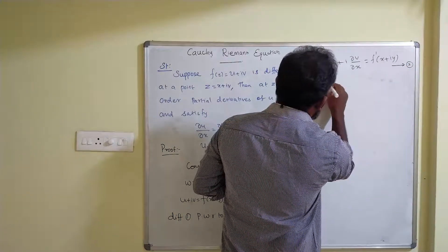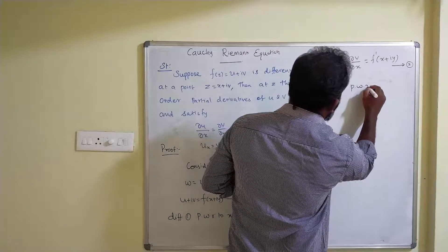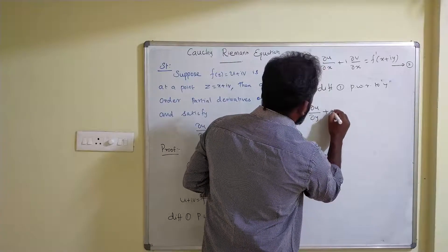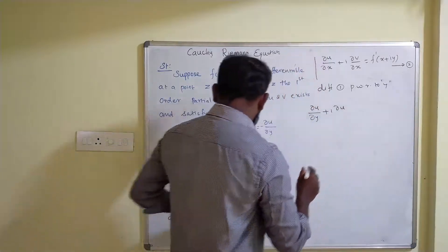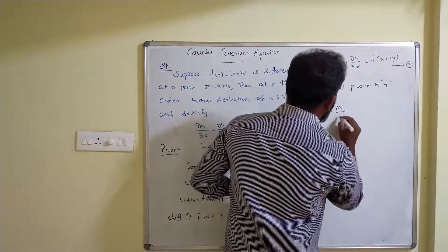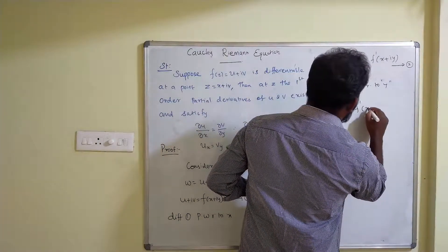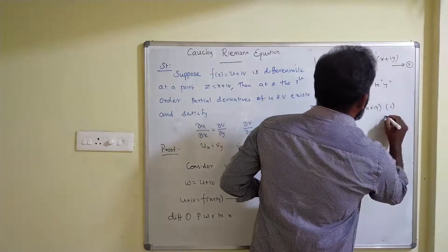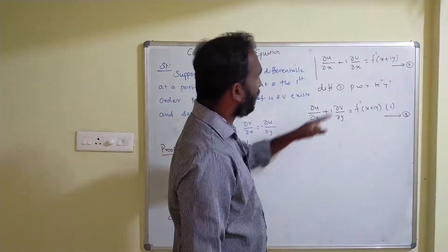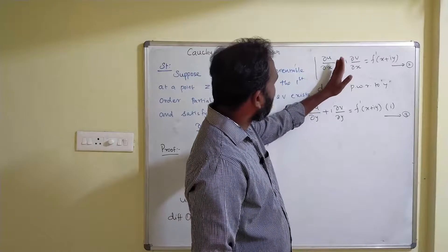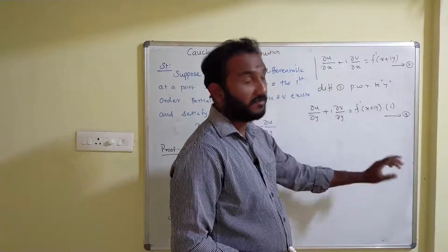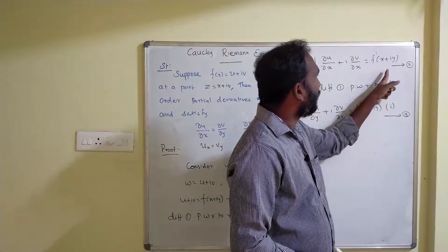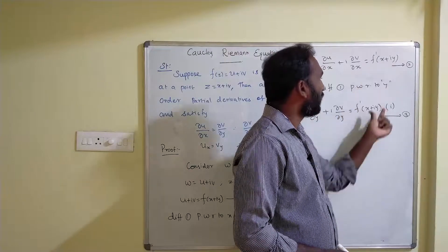Again, differentiate equation 1 partially with respect to y. We get: ∂u/∂y + i·∂v/∂y = f'(x + iy) · i, since differentiating iy with respect to y gives i. Take this as equation number 3. Both equation 2 and equation 3 have f'(x + iy) on the right-hand side, so we can substitute equation 2 into equation 3.